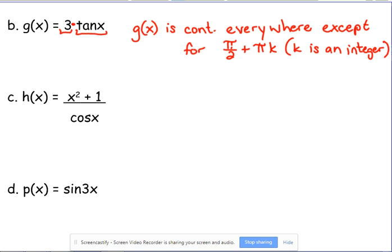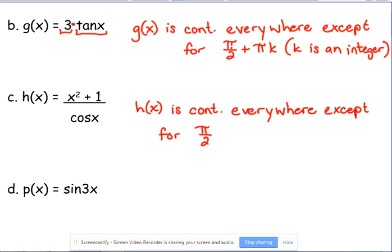Cosine of x itself is continuous everywhere except for the fact that it's in the denominator now. So h(x) is continuous everywhere except for where cosine of x equals zero. Well, that was the exception for tangent because cosine is in the denominator of tangent. So cosine equals zero at pi over 2 plus pi k, where k is an integer.